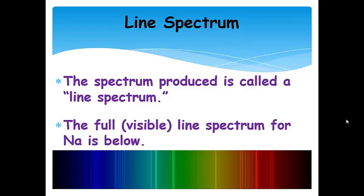That is called a line spectrum. The full visible line spectrum for sodium is here. It's hard to see that these are two separate lines, but these are the two yellow lines that we just saw previously. This is the entire line spectrum for sodium.